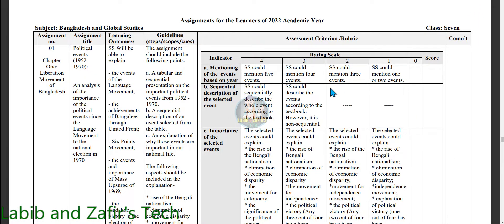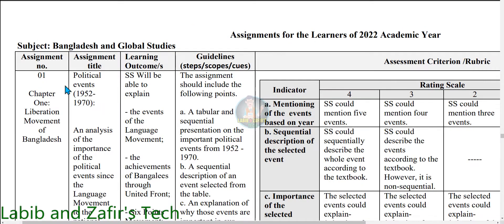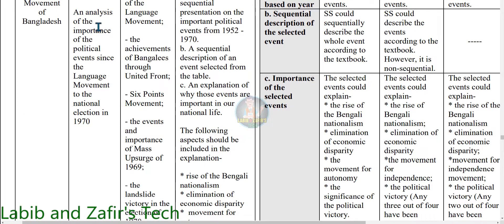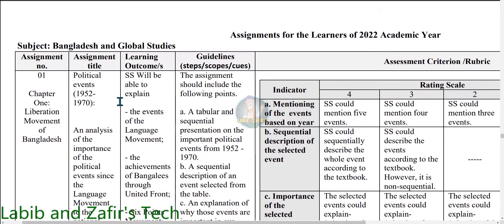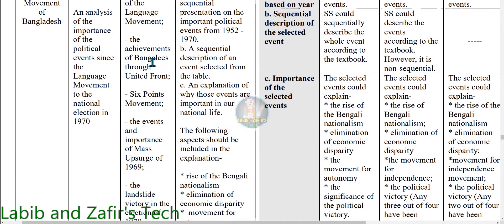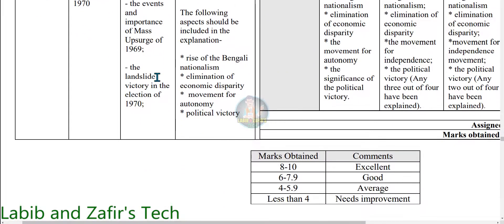Now this is your BGS assignment. Assignment number 1, Chapter 1: Liberation Movement of Bangladesh. Assignment title: Political Events 1950 to 1970 — an analysis of the importance of the political events since the language movement to the national election in 1970. Learning outcomes: Students will be able to explain the events of the language movement, the achievement of Bengalis through the United Front Six Points Movement, the events and importance of the mass upsurge of 1969, and the landslide victory in the election of 1970.